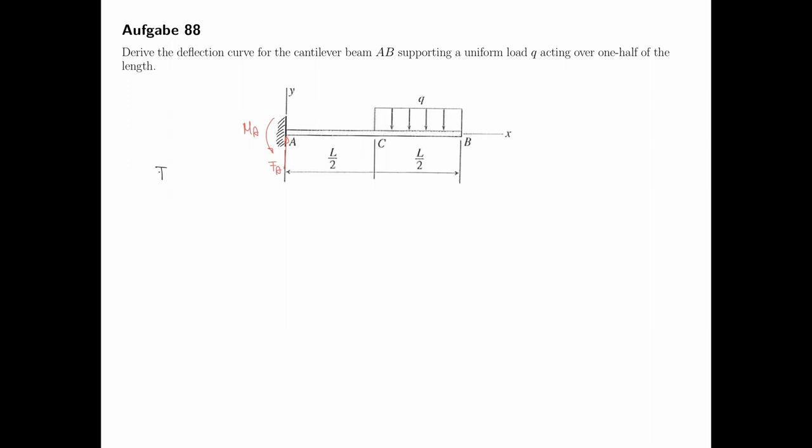Die lauten dann Q mal L halbe wieder, weil das jetzt nur bei L halbe liegt, die Streckenlast. Und das Moment lautet Q mal 3 L Quadrat Achtel mit dem Abstand.